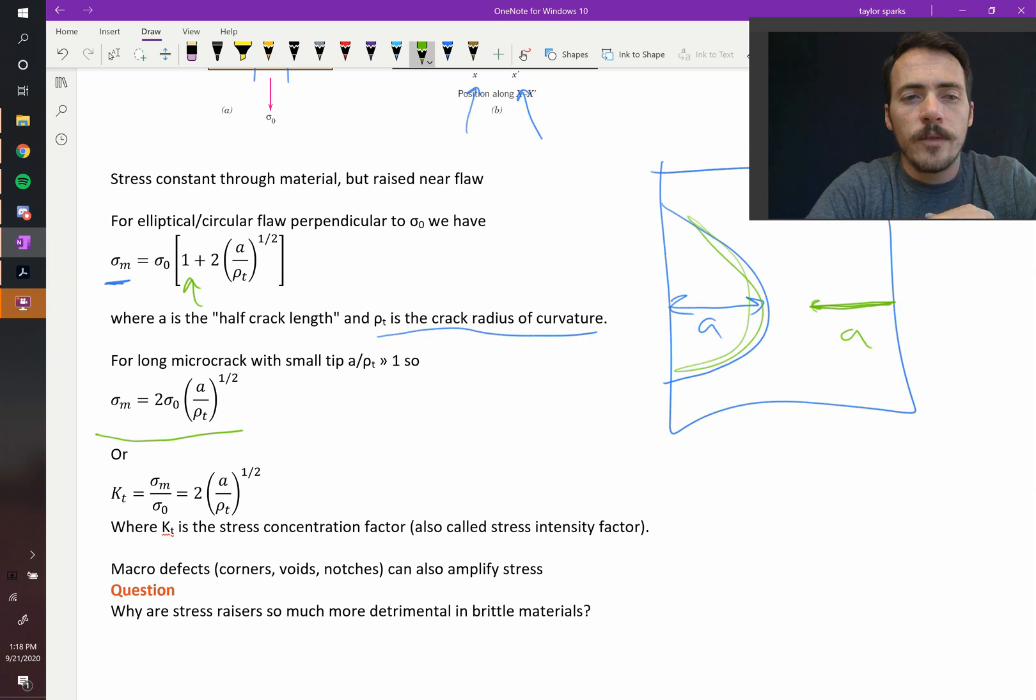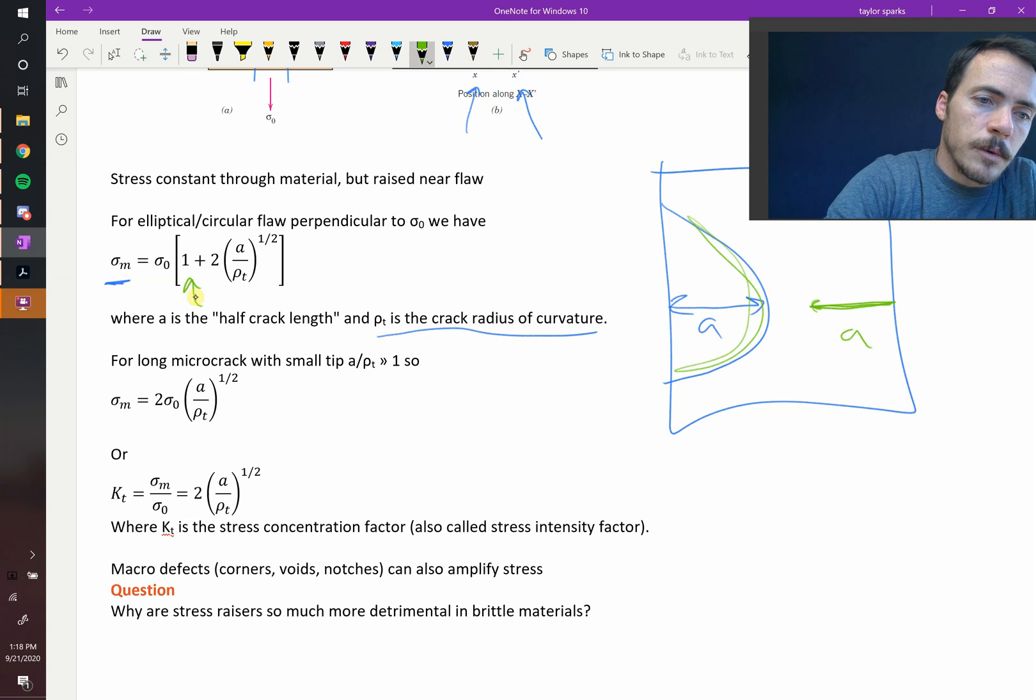Now, another way to think about this is to just bring this sigma-naught over, is to divide both sides by sigma-naught. If you divide this side by sigma-naught and divide this by sigma-naught, then you get this expression here.